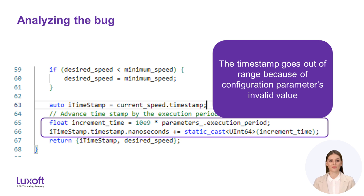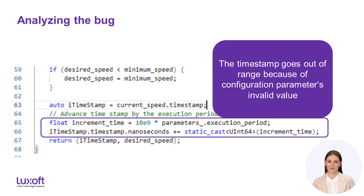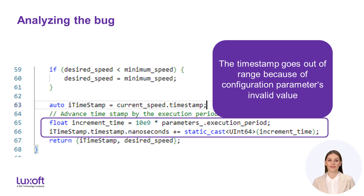Looking at the code, we can see that the conversion from seconds to nanoseconds goes out of the representable range if the execution period parameter is initialized with an implausible value. Such a situation is possible when invalid configuration gets deployed to the car — for example, after a failed over-the-air update. As a result, the behavior of the motion planning component becomes unpredictable: the timestamps it produces can be jumping back and forth chaotically, impossible to rely on and causing all kinds of problems. As the timestamp increment is derived from the configuration parameter, we need to ensure that the execution period parameter is plausible.